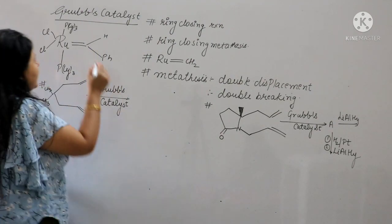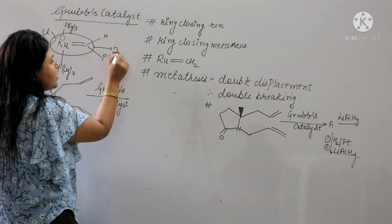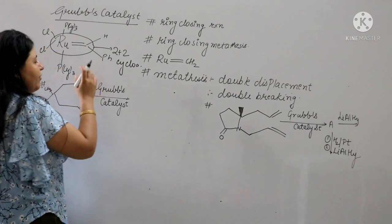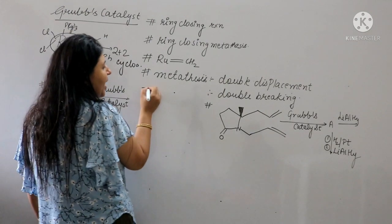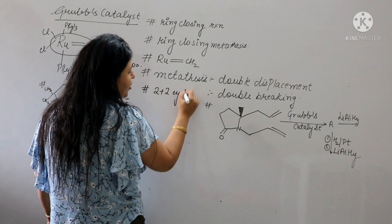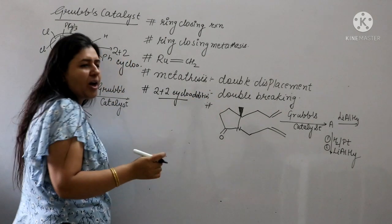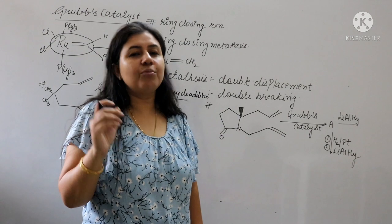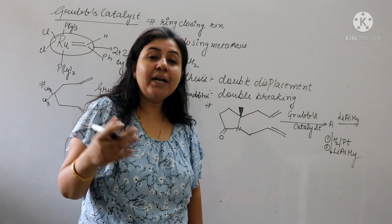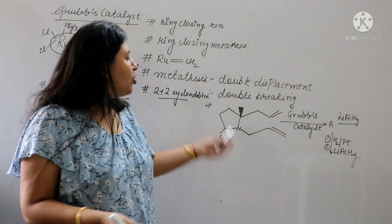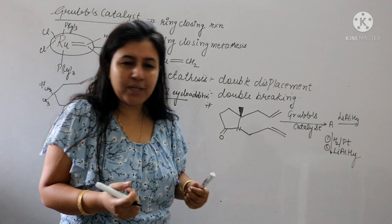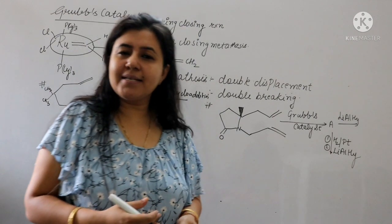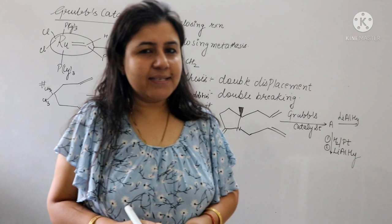The most important part is this: it is a 2+2 cycloaddition reaction with the alkene. The catalyst alkene reacts via 2+2 cycloaddition, then it removes, then reacts again via 2+2 cycloaddition. What is the meaning of metathesis? Metathesis means double displacement — as you read in class 11-12, double displacement or substitution. There is double bond breaking, that's why we call it double displacement and metathesis. So if the question asks which catalyst is used for metathesis, all organometallic — it is Grubbs catalyst.